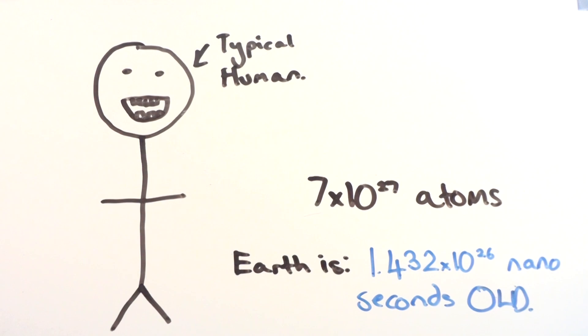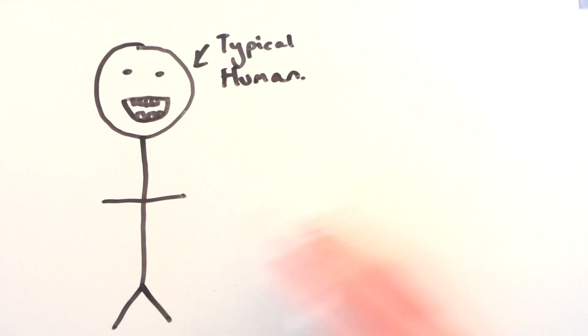All the humans on Earth make about 4.9 times 10 to the power of 37 atoms, or 49 billion billion billion billion billion atoms.